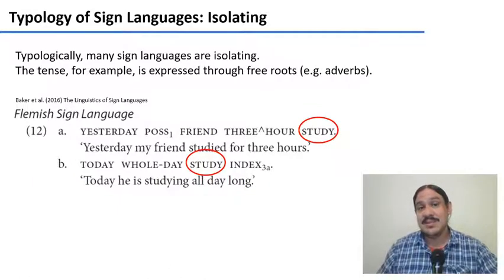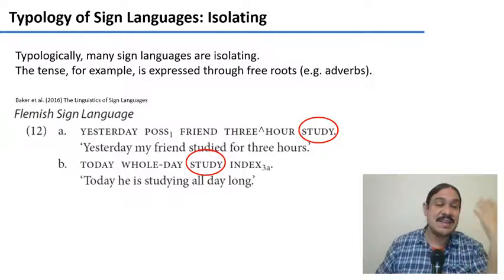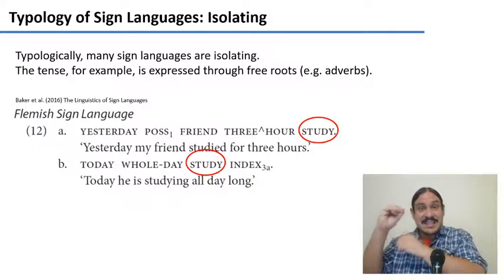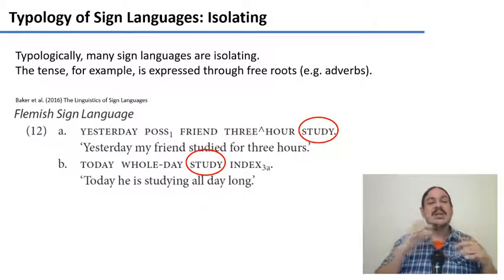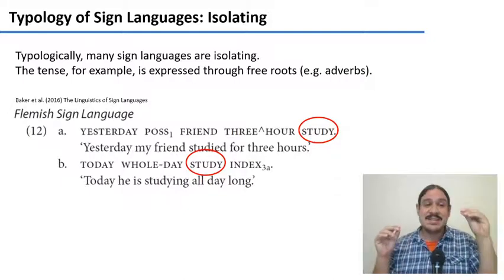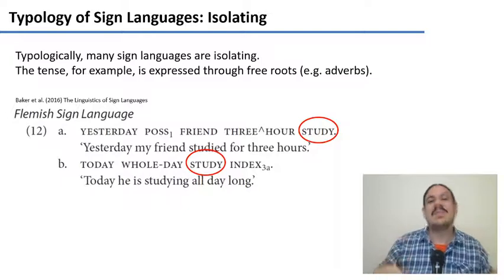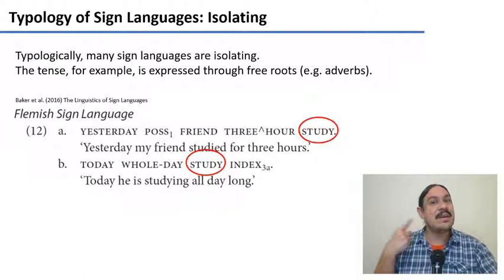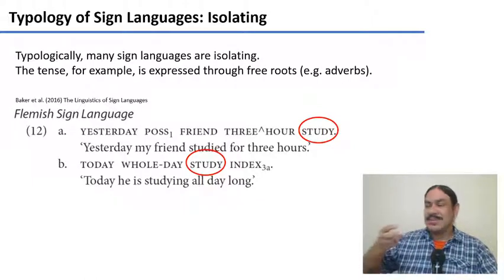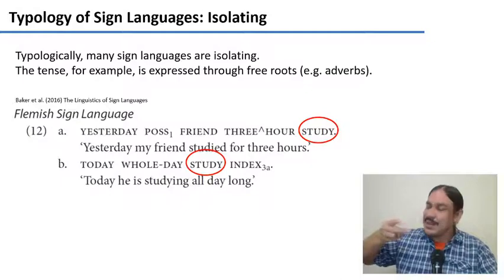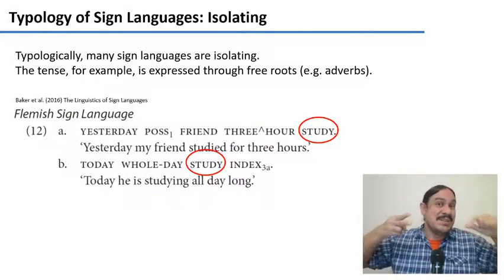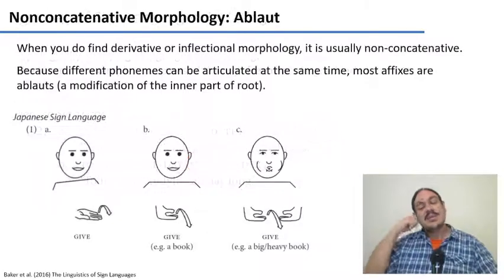Sign languages tend to be isolating in their morphology. For example, here in the Flemish sign language, you have the sentences 'yesterday my friend studied for three hours' and 'today he's studying all day long'. The verb 'study' is produced in the same way in both sentences, but the time information is given by the adverb 'yesterday' or 'today'. We see this in spoken languages as well — in English we can say 'I'm going right now' or 'I'm going tomorrow', and the time information comes from the adverbs. Flemish sign language is essentially doing the same thing.